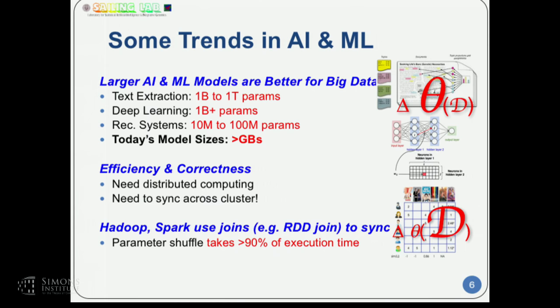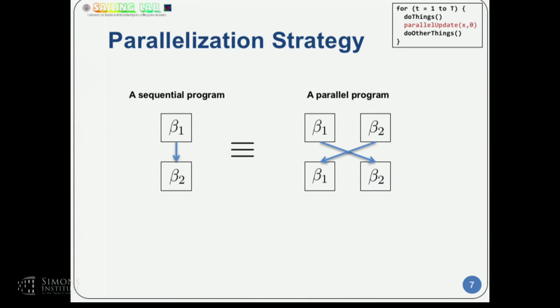Making all these machines behave as if they are a single machine is a serious and difficult technical problem. It's not only an engineering problem — a programmer assigned to this job cannot figure out how to do it right without knowing enough machine learning. People have tried solving these problems using Hadoop or Spark, and very often without a lot of success.